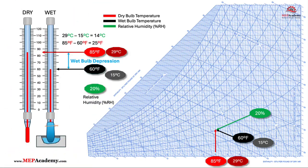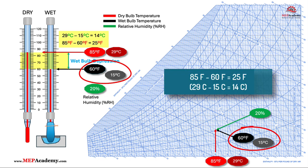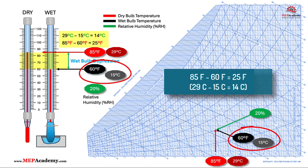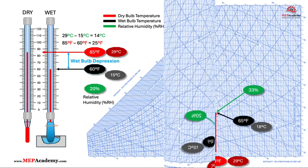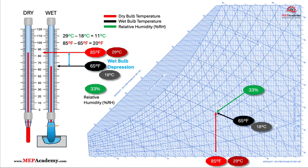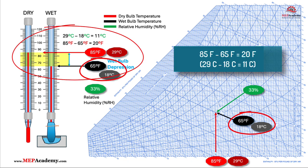If the wet bulb temperature increased to 60°F (15°C), then the wet bulb depression decreases to 25°F (14°C), and we can see that the relative humidity has increased to 20%. If the wet bulb keeps climbing and the dry bulb stays the same, the wet bulb depression keeps shrinking while the relative humidity increases, confirming that as the wet bulb gets closer to the dry bulb temperature, the relative humidity increases.